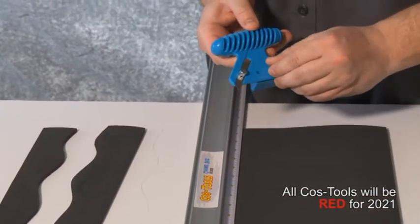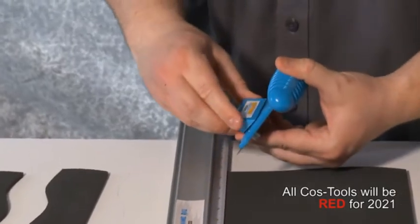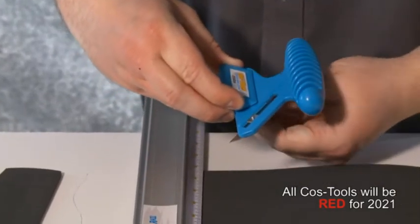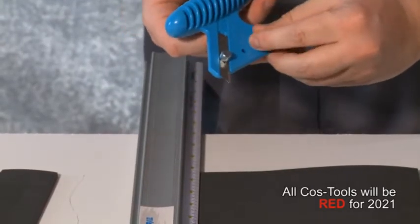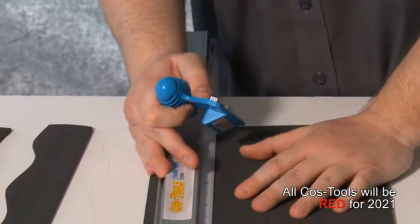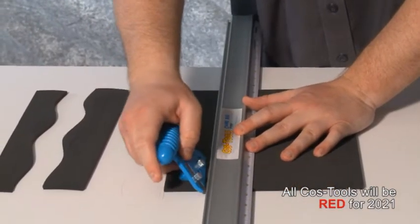To convert the tool from a 90 degree straight cutter to a 45 degree bevel cutter, loosen the screw at the base of the tool and rotate the block all the way around, then re-tighten the knob. Now the tool will cut at a 45 degree angle.